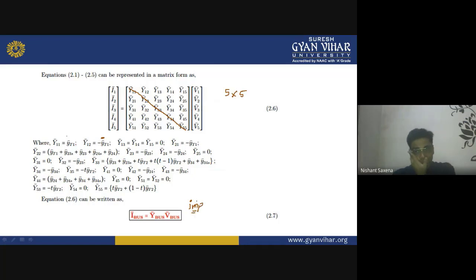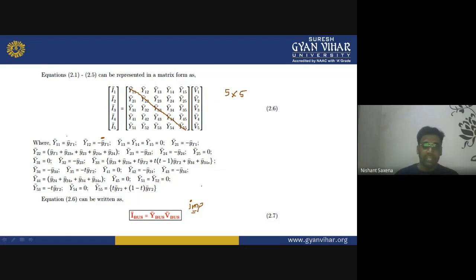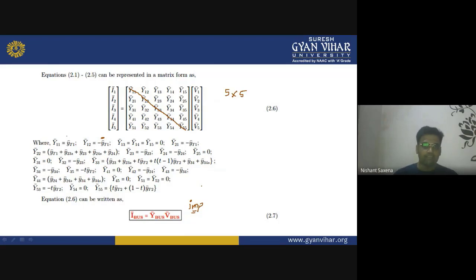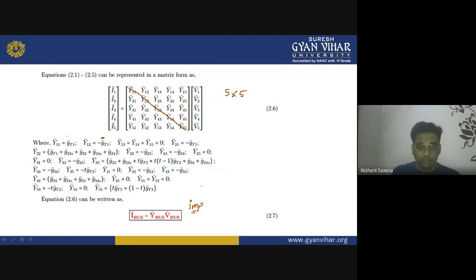We can write this for all other parameters and express the complete matrix as: I_bus = Y_bus × V_bus. So by injecting currents at each bus, applying KCL/KVL, developing equations for each bus, and transforming them into matrix form, the matrix elements Y11, Y12 etc. correspond to the developed equations. The final compact form is I_bus = Y_bus × V_bus.